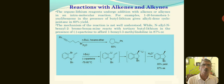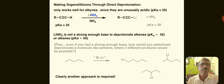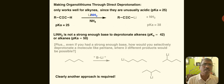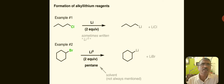Some reactions of organolithium compounds with alkenes and alkynes are shown in the slides for additional knowledge. For example, an alkyne treated with lithium amine gives alkyl lithium compounds. Other examples of the formation of alkyl lithium reagents are also shown, including alkyl lithium and aryl lithium compounds used as reagents.